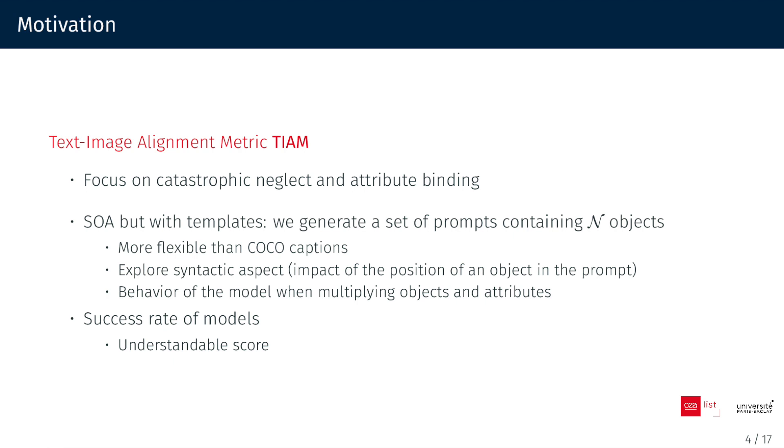We introduce a novel metric called TIAM, Text-Image Alignment Metric, specifically designed to address attribute binding and catastrophic neglect. Unlike existing automatic metrics, TIAM offers a clear focus on this critical aspect. TIAM operates similarly to Semantic Object Accuracy, but incorporates prompt templates to enhance flexibility.